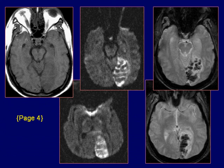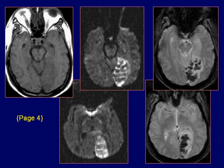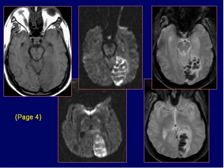Gradient echo, or T2-star, images demonstrate susceptibility artifact of the cortical gray matter greater than subcortical white matter of the left occipital lobe. CT and MR findings are consistent with hemorrhagic left occipital cerebral infarct.